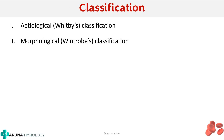Now coming to the classification of anemia, there are two types. One is the etiological classification, or Wintrobe's classification, which is based on the cause of anemia. The other is the morphological classification, or Wintrop's classification, which looks at the morphology of the RBC. The most important one is the etiological classification.